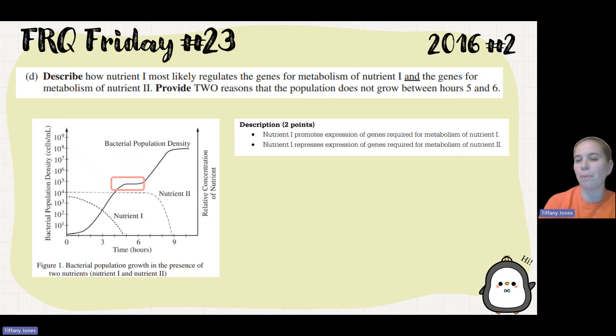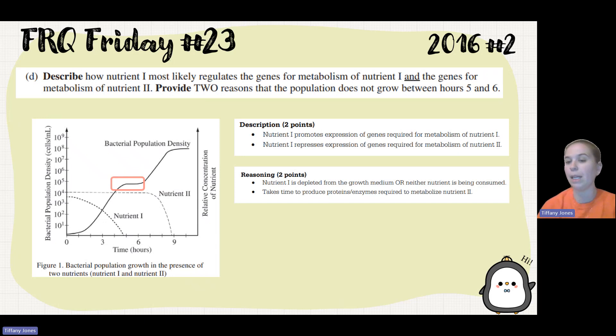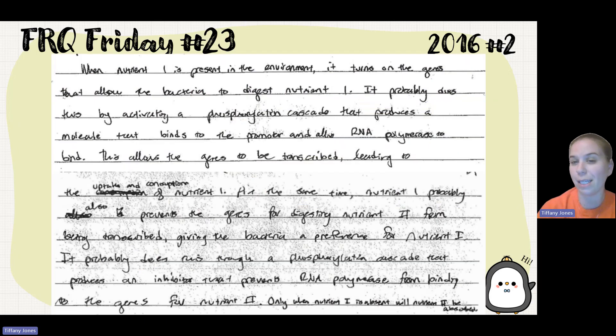Now it says provide two reasons the population does not grow between hours five and six. Here we can see that between five and six, the amount of the individuals are equal. Why is there no food being consumed? Well, it's ran out of nutrient one. It's staying level and we haven't started breaking down nutrient two. So maybe we need to make the enzymes required to break down nutrient two. The population isn't able to grow because it doesn't have any food because nutrient one is depleted. It also doesn't have the way to break down nutrient two. So nutrient one is depleted, no nutrients being consumed, or it takes time to produce the enzymes required.